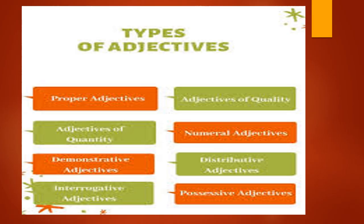In this slide we will learn about kinds of adjectives. There are seven types of adjectives. Adjectives may be divided into the following classes: first, adjectives of quality; second, adjectives of quantity; third, adjectives of number; fourth, distributive numeral adjectives; fifth, demonstrative adjectives; sixth, possessive adjectives; and the last one is interrogative adjectives. These are the different types of adjectives.